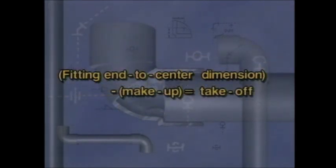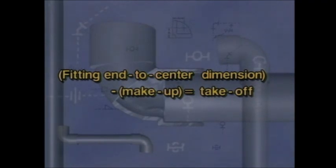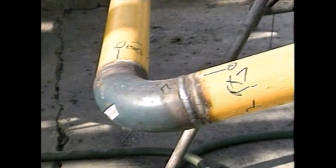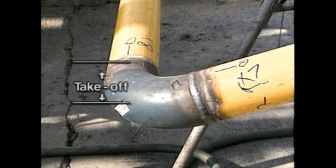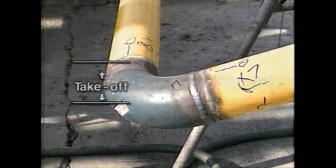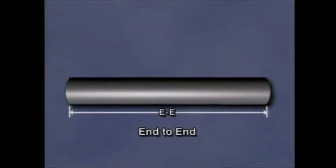Again, to figure takeoff, find the end-to-center dimension for a fitting from the table. Then subtract the make-up, or how far the pipe inserts into the fitting. For socket weld fittings, include the allowance for heat expansion. For butt weld fittings, no make-up is involved, so takeoff is the dimension from the end to the center of the fitting. Of course, if the dimension is end to end, that means the actual pipe measurement and takeoff doesn't have to be figured.